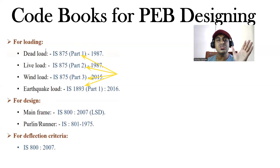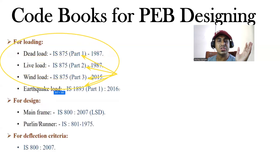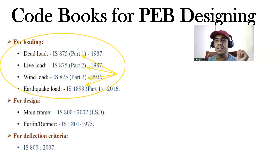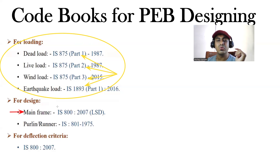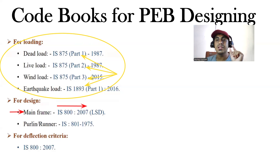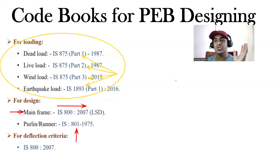These loading code books are general and apply to both RCC and steel structures. For steel structures, the main code book is IS 800:2007, which stands for Limit State Design. This is used for the mainframe elements — rafters and columns. For purlins and girts, which are cold-formed sections, we refer IS 801.